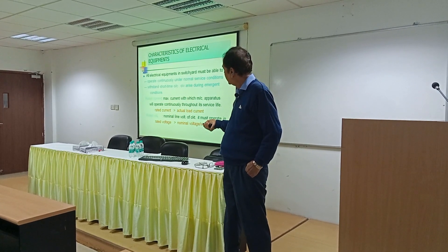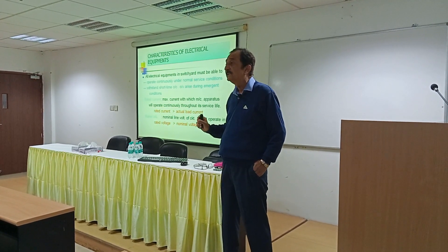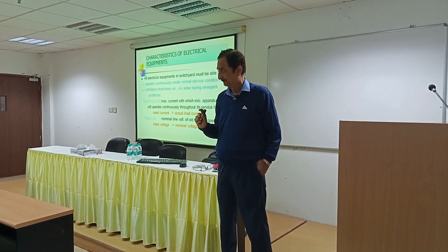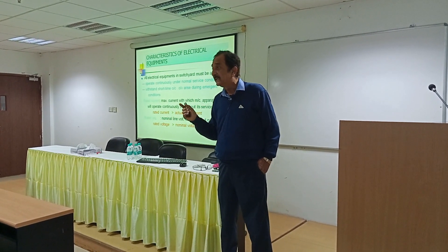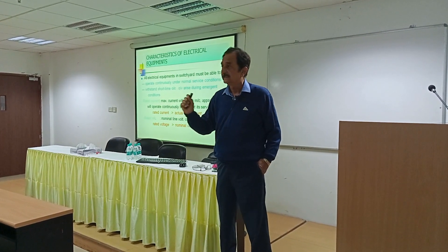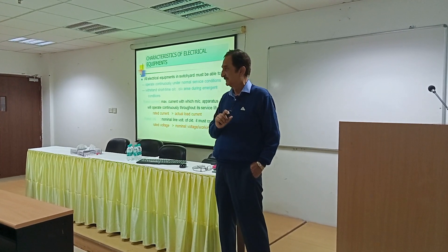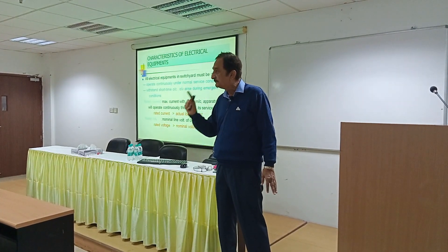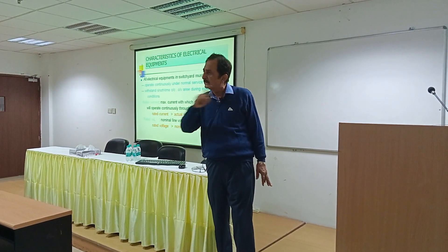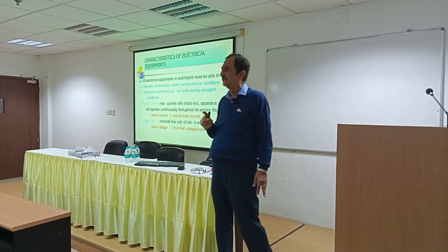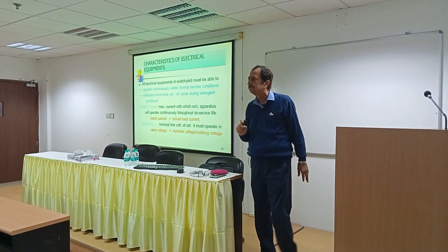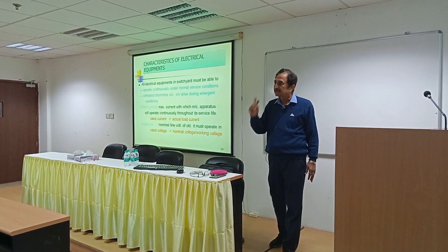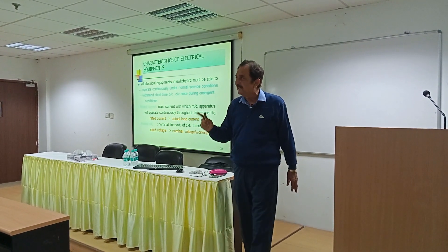Let's try to understand with an example. Suppose this is a switch. Switches have specific ratings written on them. What is written on the switch? 6 amperes, 250 volts. What does this mean? 6 amperes means that 6 amperes can continuously flow through it — even for 10 years.